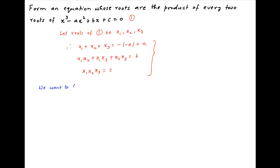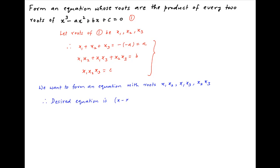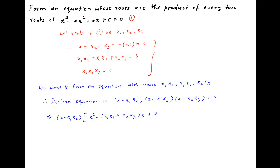Now we need to form an equation whose roots are x1x2, x1x3, and x2x3. Therefore the desired equation is (x − x1x2)(x − x1x3)(x − x2x3) = 0. Opening up the left-hand side, we get (x − x1x2) multiplied by [x² − (x1x3 + x2x3)x + x1x2x3²] = 0.